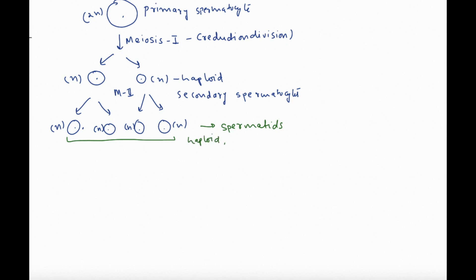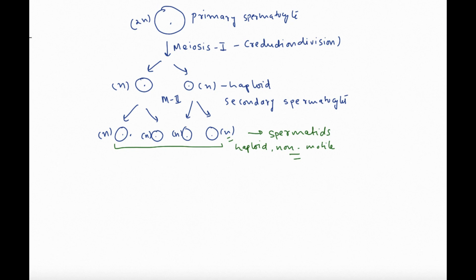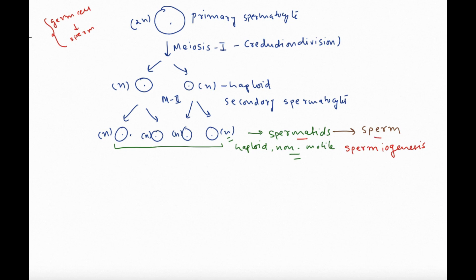Spermatids are circular, haploid, and non-motile — they don't have a tail or the machinery to be motile yet. These spermatids will undergo certain changes to become mature sperm, and that process — from spermatids to mature sperm — is called spermiogenesis. The complete process from germ cell to mature sperm is called spermatogenesis, while specifically from spermatid to mature sperm cell is called spermiogenesis. Spermiogenesis is thus one stage within spermatogenesis.